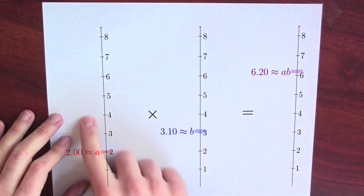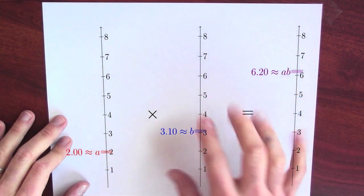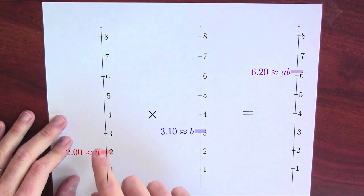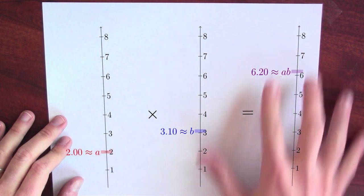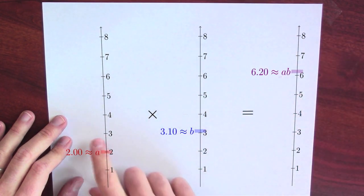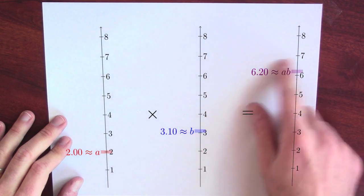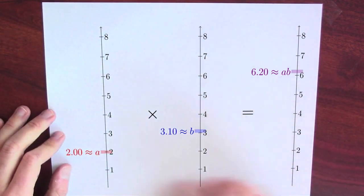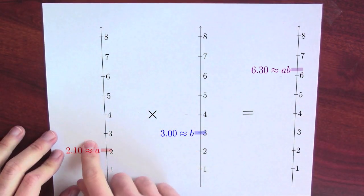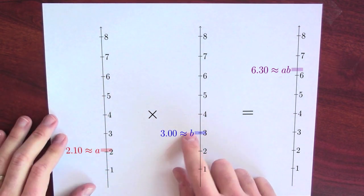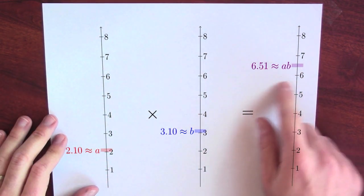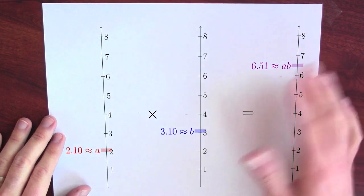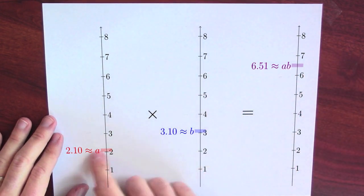The deal here is that wiggling the input affects the output by a magnitude that's related to the size of the other number, right? When I went from 2 to 2.1, the output was affected by about 3 times as much, the 3. When I moved the 3 from 3 to 3.1, the output was affected by about 2 times as much. And these effects add together. What if I simultaneously move A from 2 to 2.1 and move B from 3 to 3.1? Then the output is 6.51, which is close to 6.5, which is what you'd guess the answer would be if you just add together these effects.